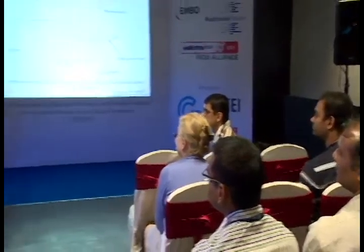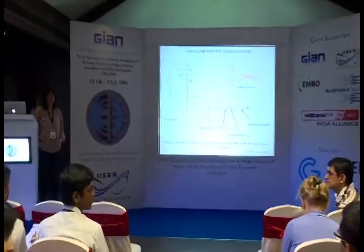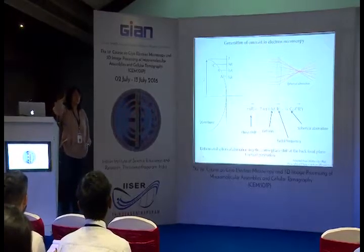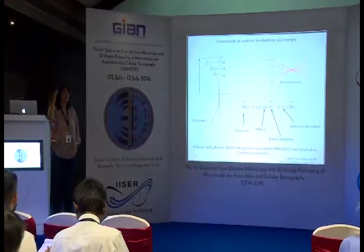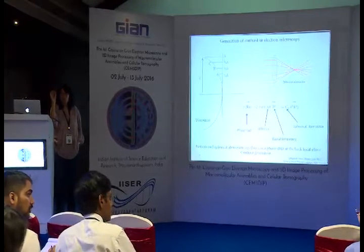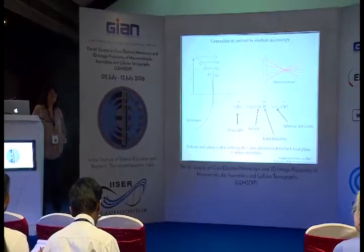Regarding combining phase plate and energy filter: yes, it is absolutely possible to have a microscope fitted with both a phase plate and an omega filter, which can further improve contrast. The in-column filter is generally better than the post-column filter at removing inelastically scattered electrons. Whether a microscope can be retrofitted with a phase plate or energy filter is something still being investigated.